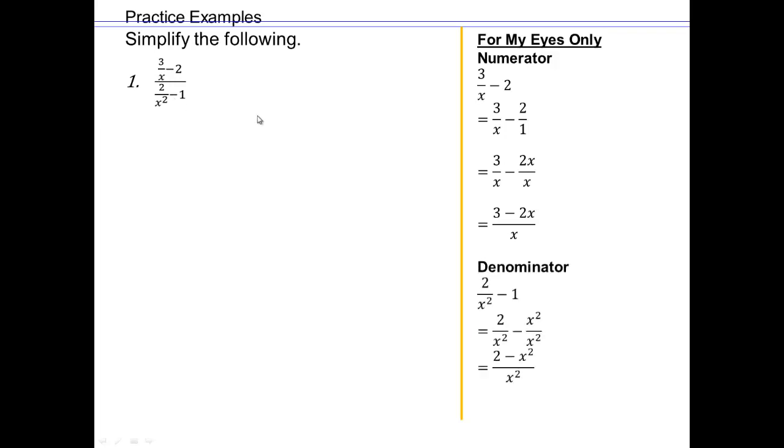For the bottom fraction, which is the denominator here, we have 2 over x squared minus 1, or 2 over x squared minus x squared over x squared, which will give you 2 minus x squared over x squared.